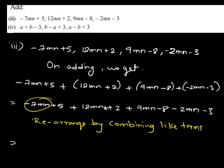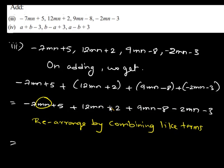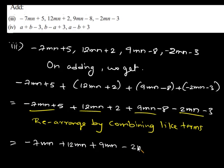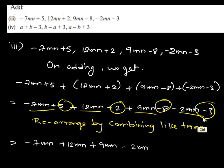There is another term, 2mn, having mn as the variable factor. Therefore, in total we have 4 terms having the same variable factor mn. Therefore, we can say that all these 4 terms are like terms. Let us write these terms together: negative 7mn plus 12mn plus 9mn minus 2mn. And again, 5 is a constant, 2 is also a constant, negative 8 is also a constant, and negative 3 is also a constant factor.